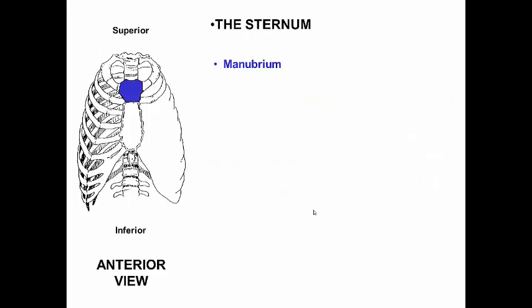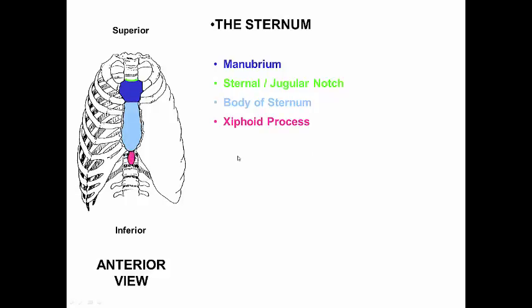Finally, let's look at the sternum, which has three sections. You have your manubrium — the superior-most portion of the sternum. You have your sternal or jugular notch, which is the very top of the manubrium. You have the body of the sternum, and then the xiphoid process. If you do CPR incorrectly, you can sometimes break off the xiphoid process and it can puncture the lungs.